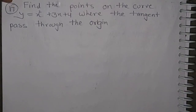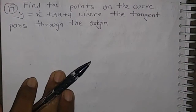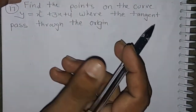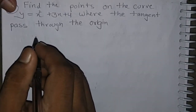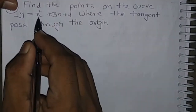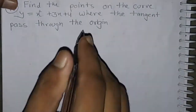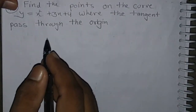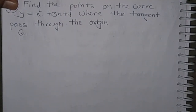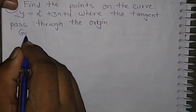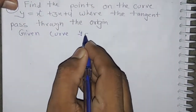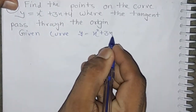Question number 17: Find the points on the curve y = x² + 3x + 4 where the tangent passes through the origin. We have to find those points on the curve where, when we draw the tangent, it will pass through the origin. Given curve: y = x² + 3x + 4.